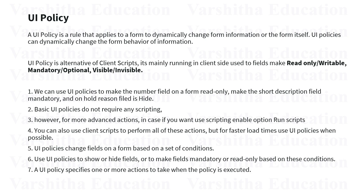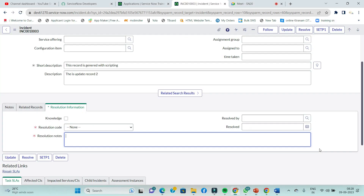By using UI policy, you can make a field read-only or writable, mandatory or optional, or visible or invisible. These two categories — read-only or writable, mandatory or optional, and visible or invisible — can be changed using UI policies. Mandatory means the star mark is shown on the field.